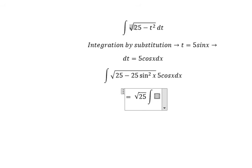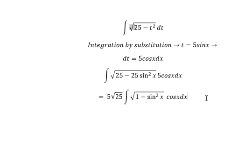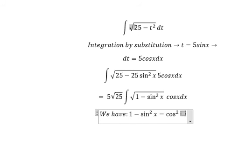And we got about square root 1 minus sine to the power of 2. And we have number 5 here we put outside, and here we have cosine x dx. We have 1 minus sine to the power of 2 x is about cosine x to the power of 2.